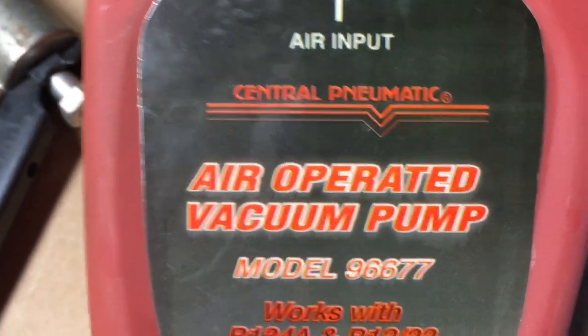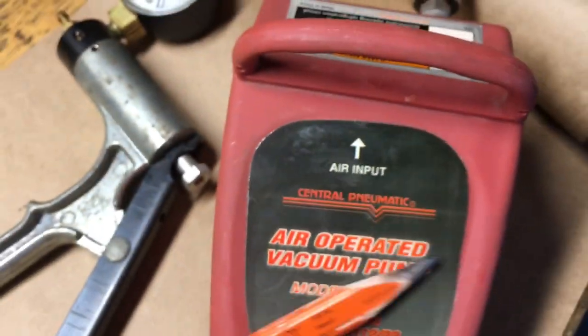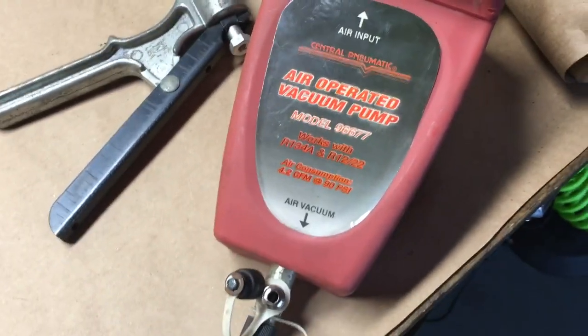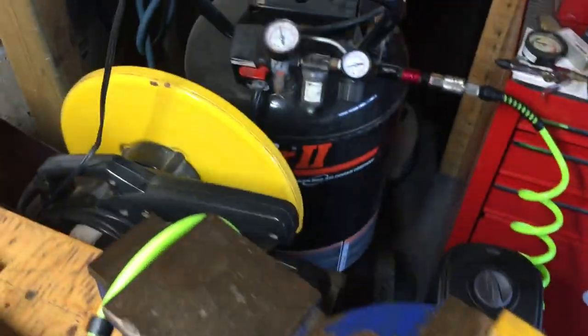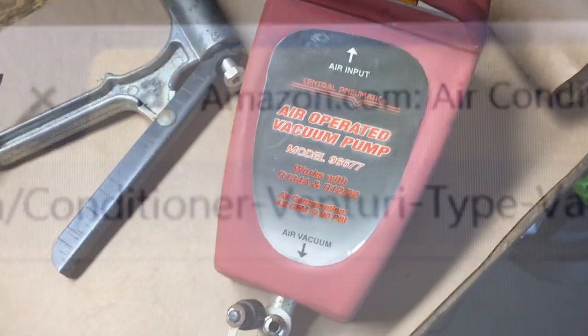Here is by the way it is a central pneumatic. I have no idea if they are still in business or not. There is the model number. A handy wee tool if you want to pull a vacuum on something. Of course you need the facility to pressurize it with a pretty serious volume going through it. If you want to maintain that vacuum.